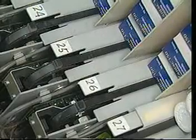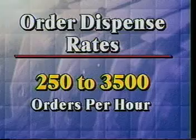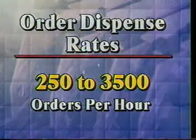Dispensing occurs when the dispenser's microprocessor receives picking instructions from the SI System Manager module. Orders can be dispensed at rates between 250 and 3,500 orders per hour. The Dispens-O-Matic order collection module is merely a belt conveyor that runs through the center of the entire machine.